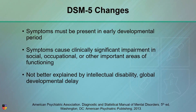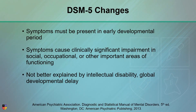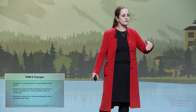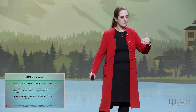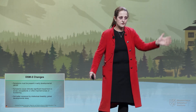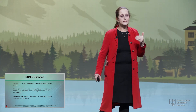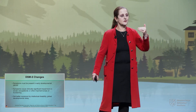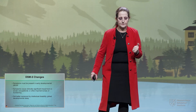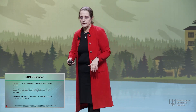It has to present early in the developmental period. This cannot magically appear at 15 when you've been completely neurotypical before that. They have to have impairment, and it can't be better explained by an intellectual disability. Somebody with a full-scale IQ of 40 and commensurate behavior probably doesn't have autism — they just have intellectual disability. And the same thing applies to global developmental delay.